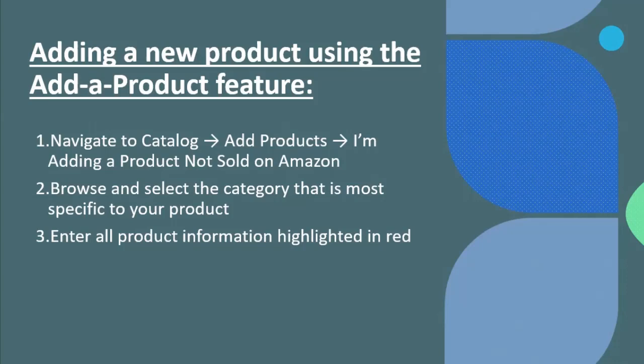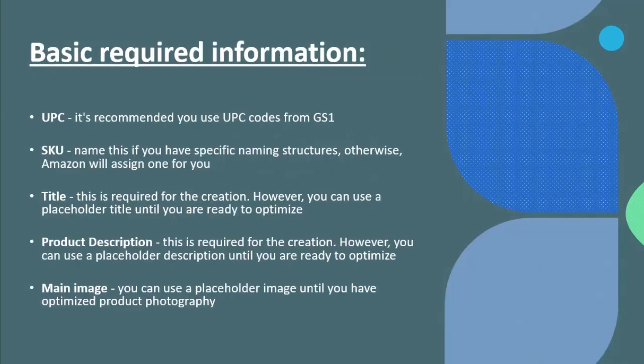Browse and select the category that is most specific to your product. Then enter all product information that is highlighted in red. This is the basic required information which is necessary to add your product to your listing.